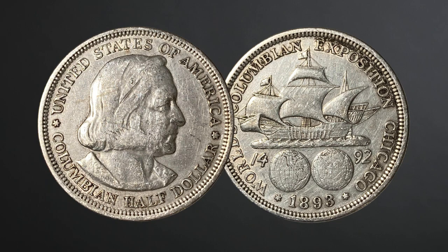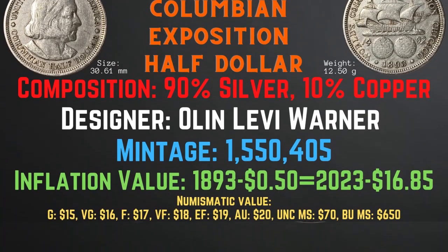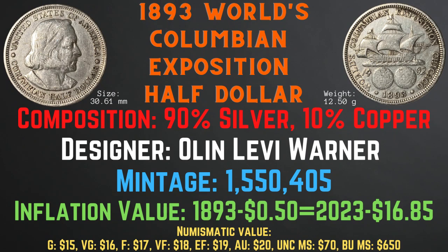Now let's take a look at the 1893 World's Columbian Exposition Half Dollar. It was minted in Philadelphia without any mint mark. The size is 30.61 millimeters and the weight is 12.5 grams. The composition is 90% silver and 10% copper. Its designer was Olin Levi Warner, with a mintage of 1,550,405. Its inflationary value for the year 1893 is $16.85. The numismatic values range from $15 in good condition up to $650 in brilliant uncirculated mint state condition.